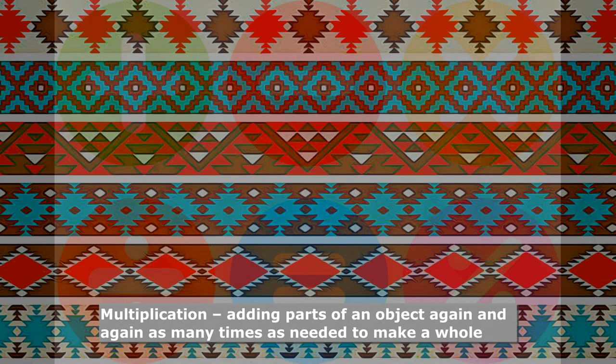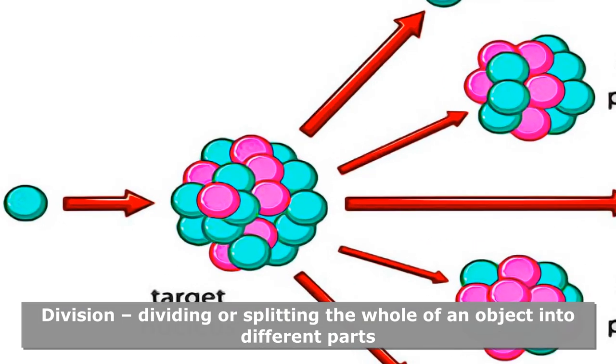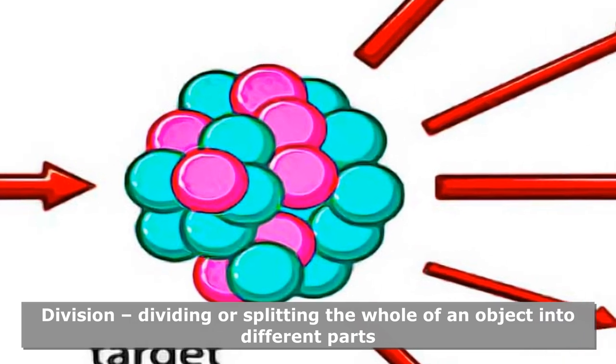Multiplication is adding parts of an object again and again as many times as needed to make a whole. Division is dividing or splitting the whole of an object into different parts.